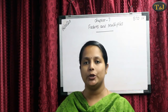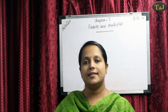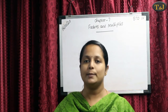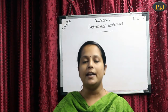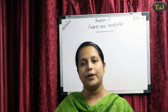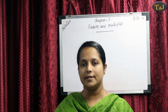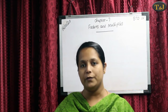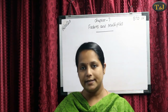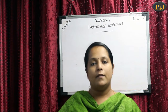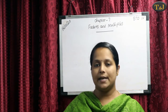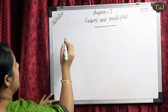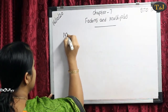Hi students, today we are going to take a new lesson. Lesson 7: Factors and Multiples. Our first heading is Multiples. When we multiply a number by 1, 2, 3, 4, etc., its result is known as its multiples. I will explain with the help of some examples. Consider the first 10 multiples of 2.